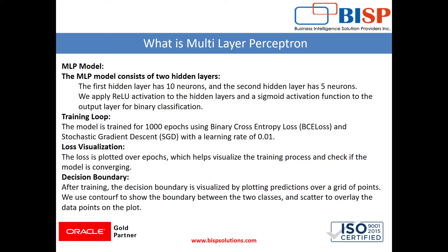The MLP multilayer perceptron model consists of two hidden layers. The first hidden layer has 10 neurons and the second hidden layer has 5 neurons. We apply ReLU activation to the hidden layers and sigmoid activation to the output.